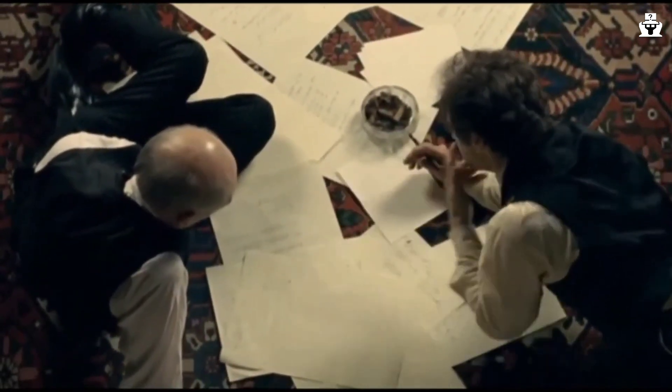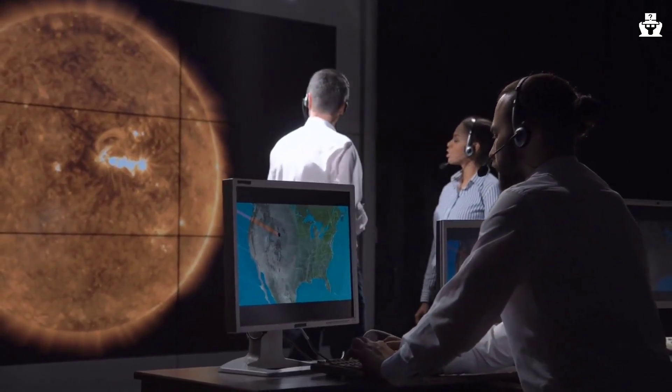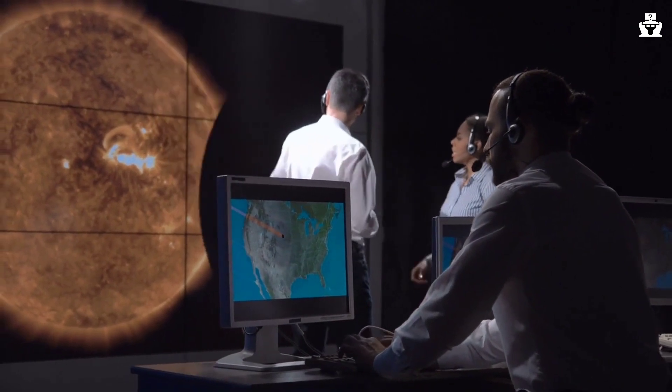In 1919, an opportunity presented itself. There was going to be a total solar eclipse visible from South America and Africa, and this presented a unique opportunity to test Einstein's theory.